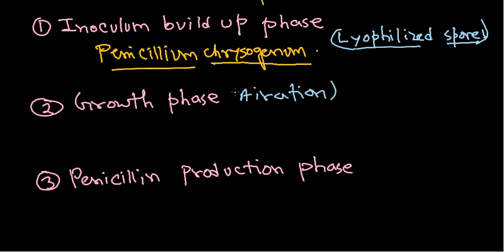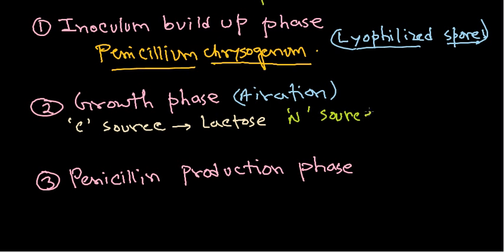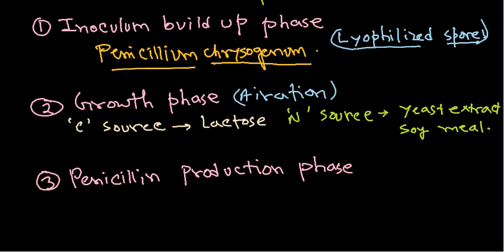Aeration is required and then growth occurs. For growth we need to feed the fungi: the carbon source here is lactose, and we also need a nitrogen source, which can be yeast extract or soy meal. Soy meal can also act as a nitrogen source.